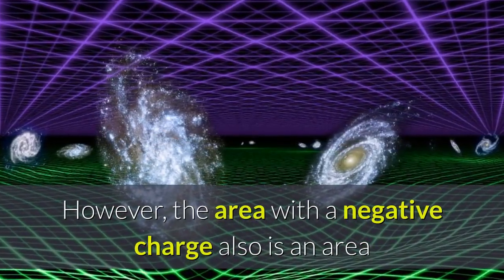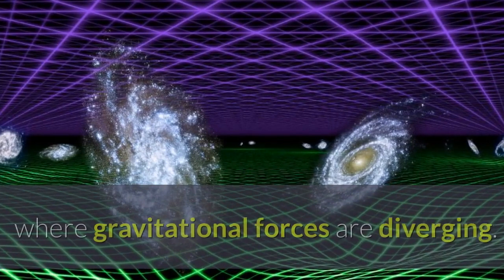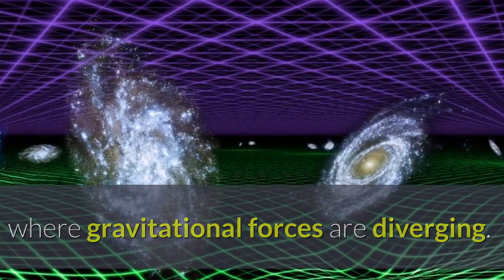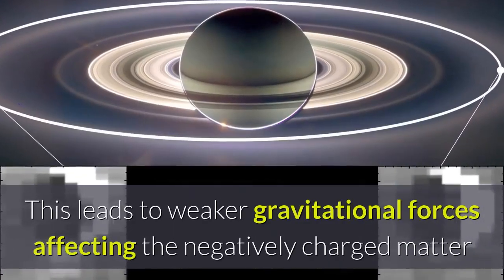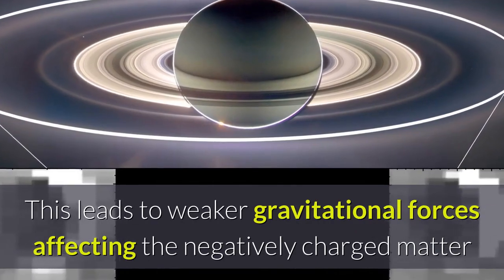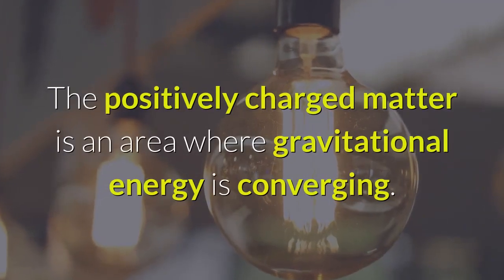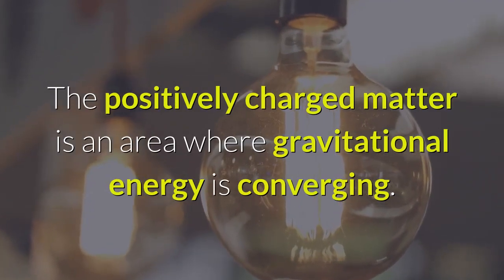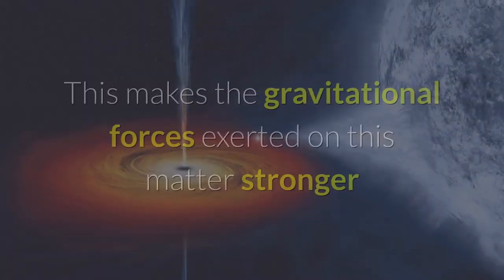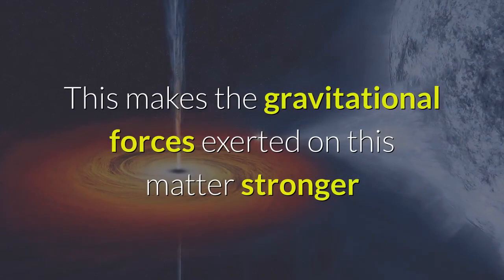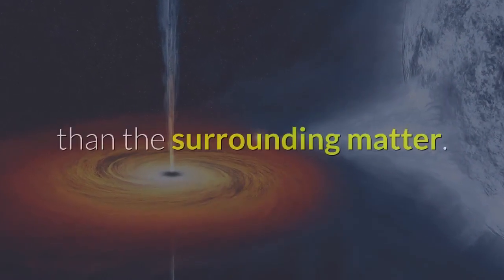However, the area with a negative charge also is an area where gravitational forces are diverging. This leads to weaker gravitational forces affecting the negatively charged matter than the surrounding matter. The positively charged matter is an area where gravitational energy is converging. This makes the gravitational forces exerted on this matter stronger than the surrounding matter.